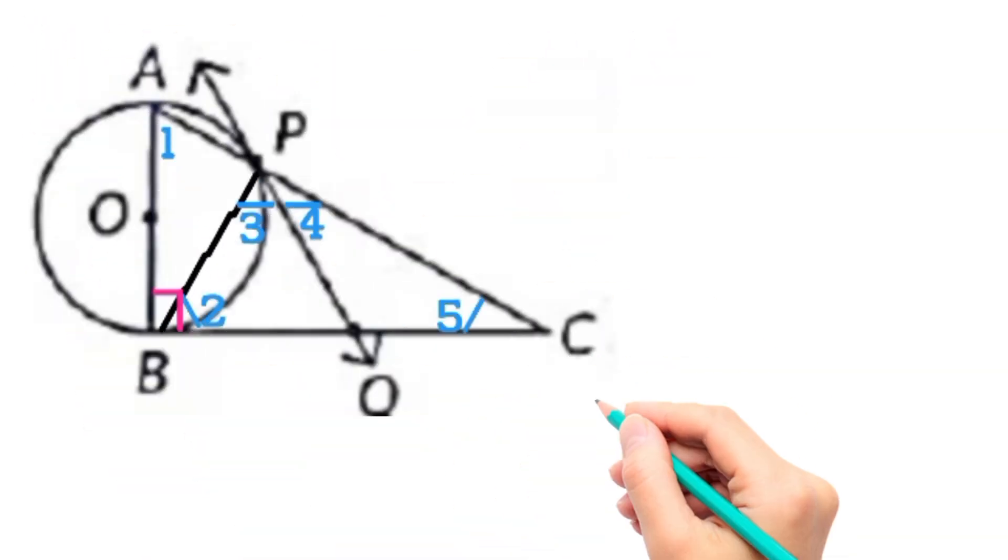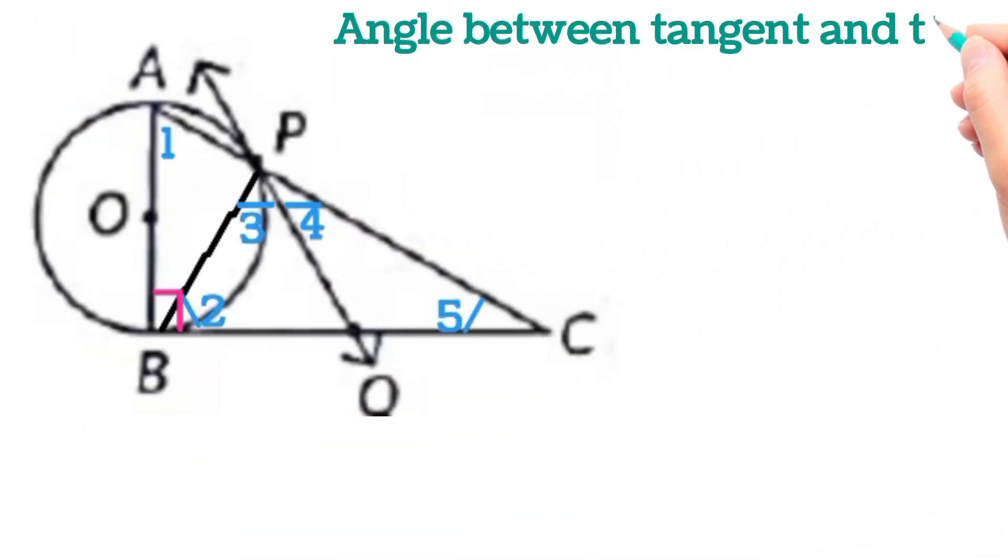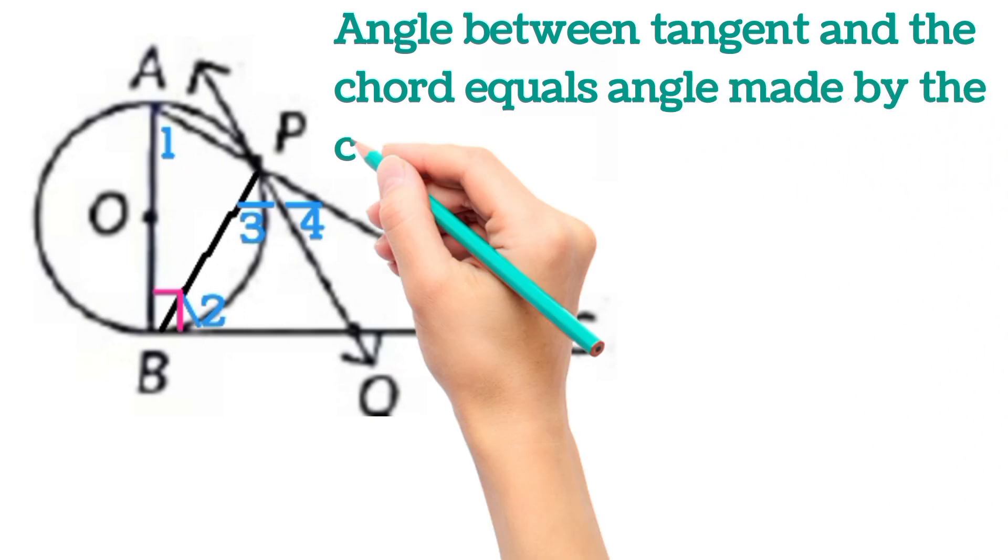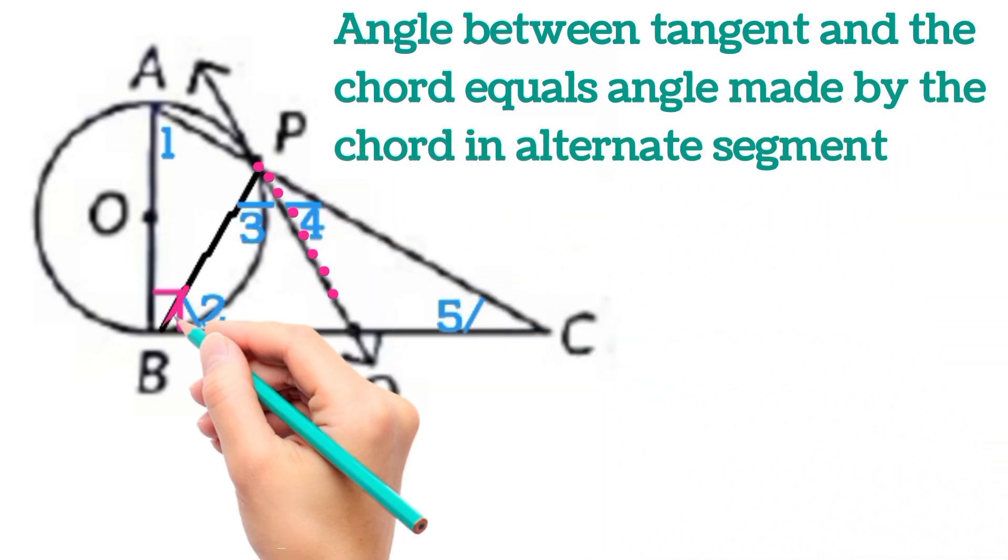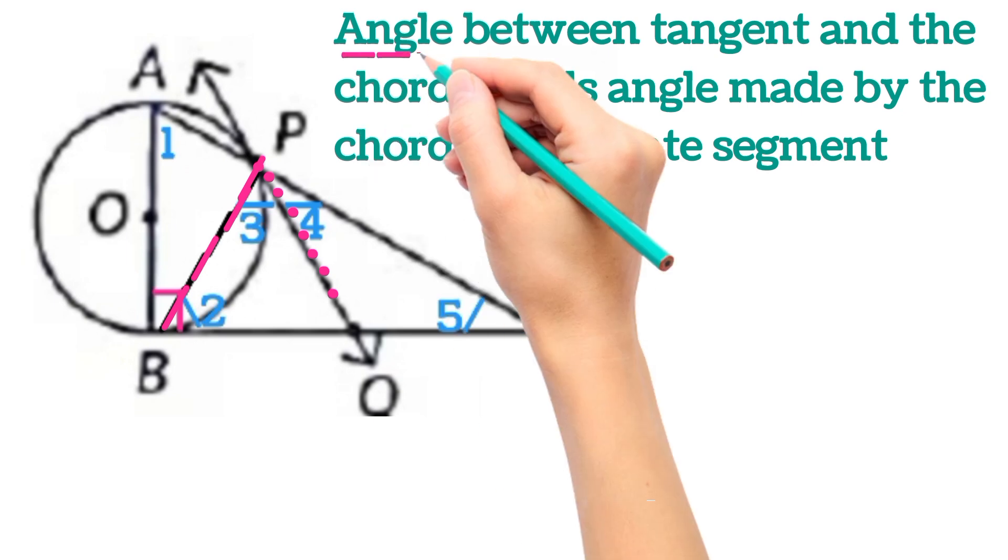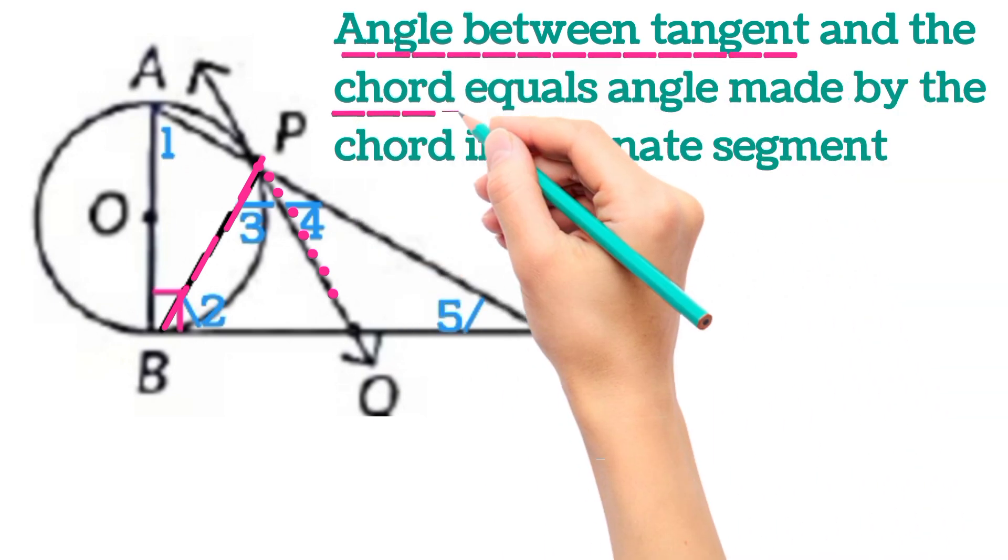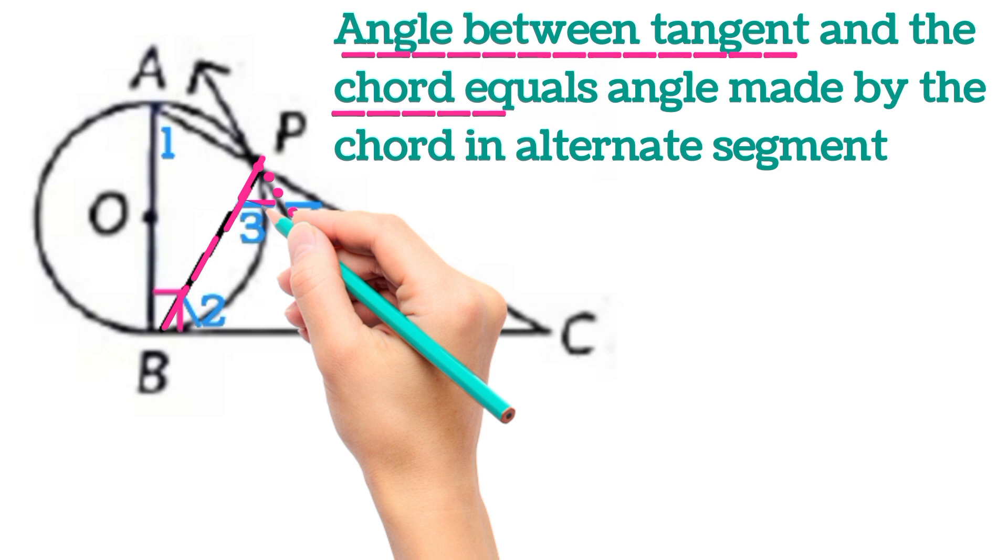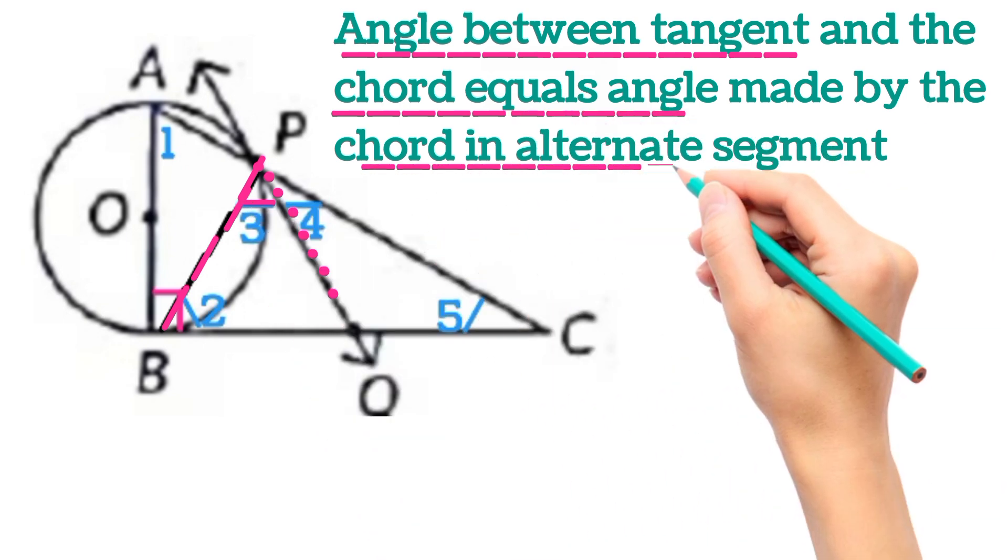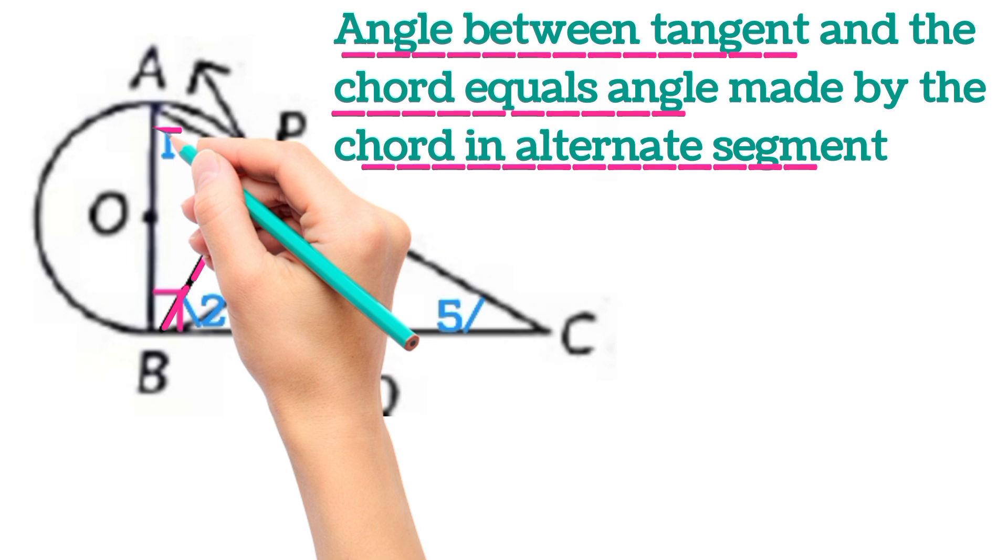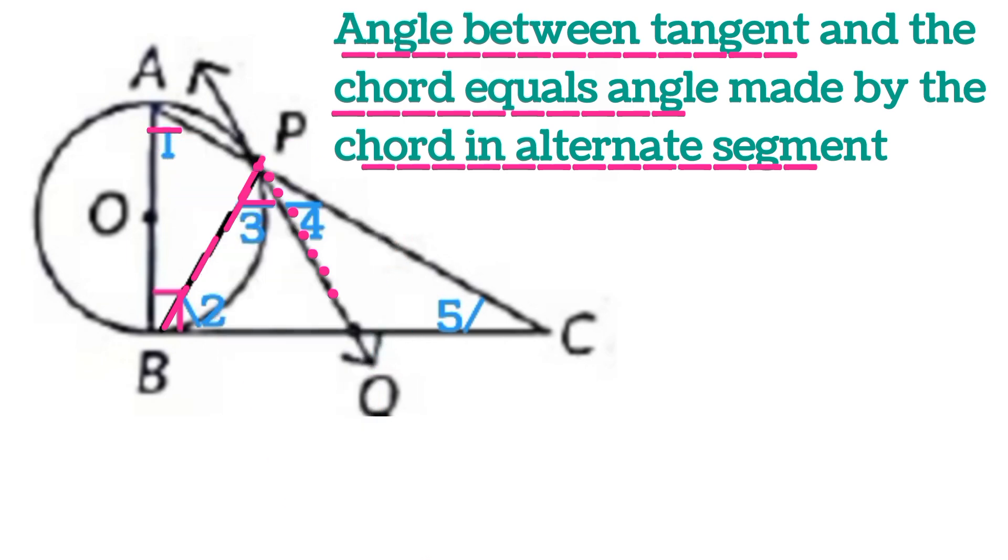This is the given figure. We know that angle between the tangent and the chord equals angle made by the chord in alternate segment. So this is the tangent and this is the chord. The angle between the tangent and chord, that is this angle, will be equal to angle made by the chord in alternate segment, that is this angle. So we will have angle 3 is equal to angle 1.